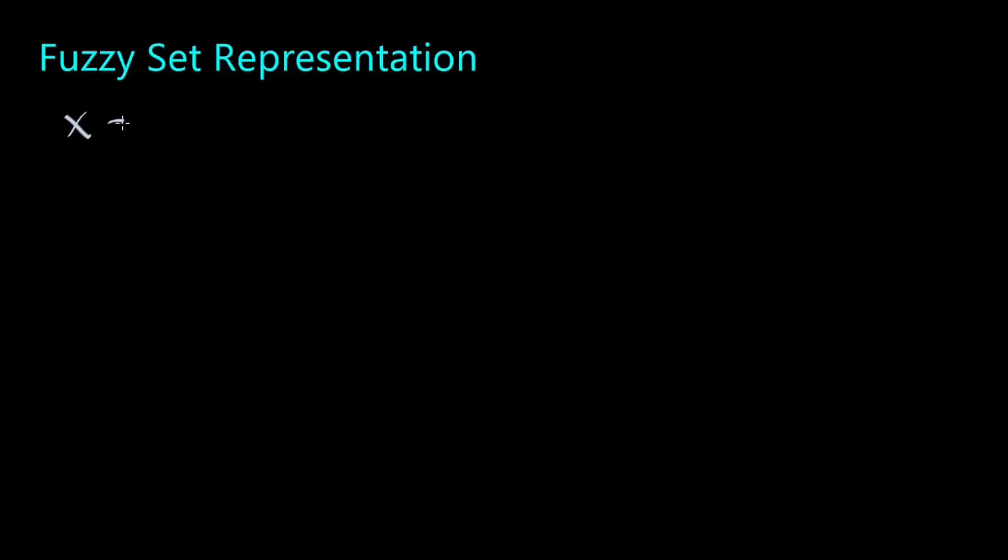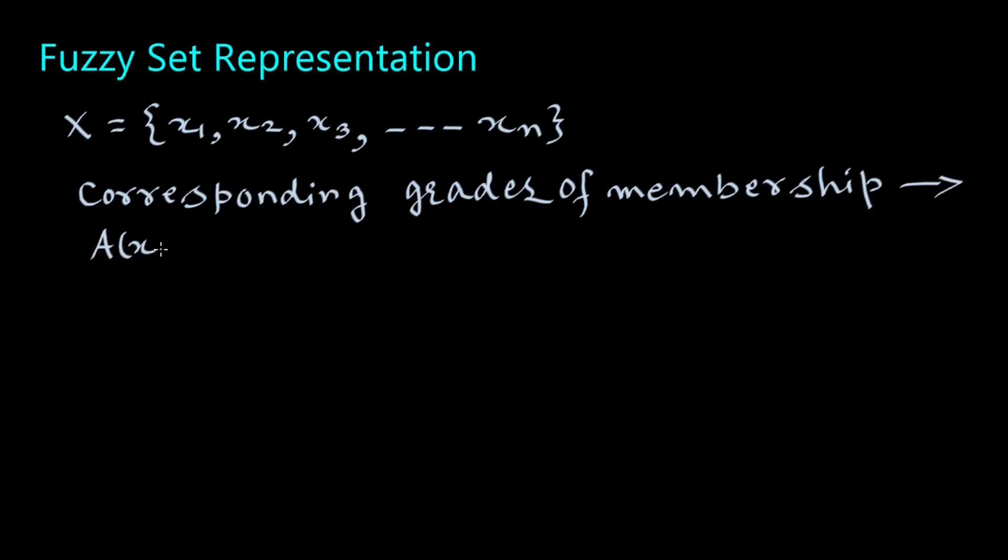Let X be the universal set containing members X1, X2, X3, etc. Xn and their corresponding grades of membership be A(X1), A(X2), A(X3), etc. A(Xn) belonging to the set closed interval 0,1.